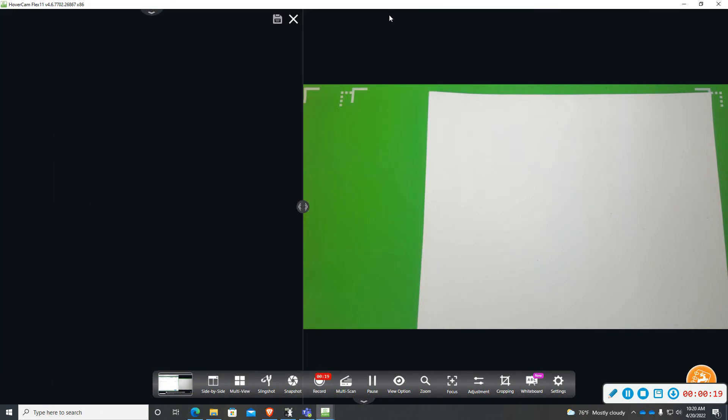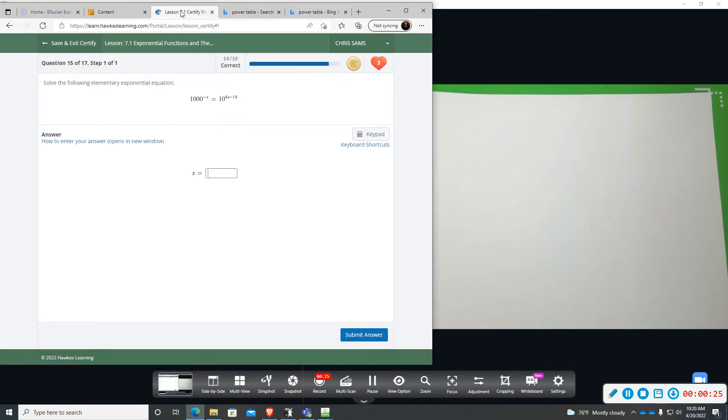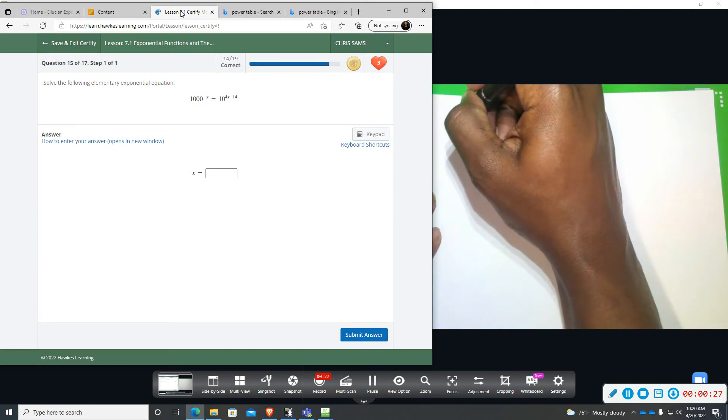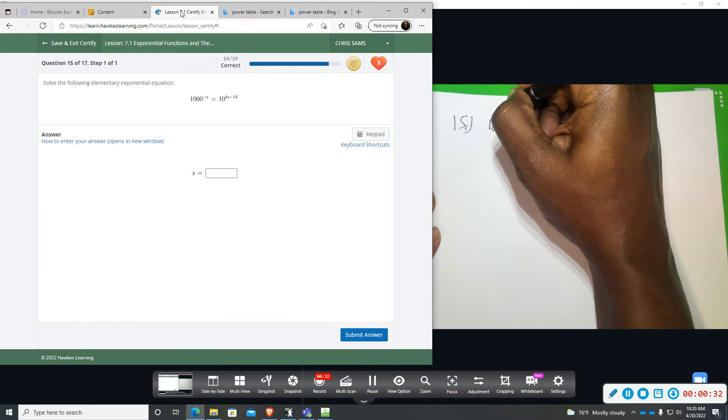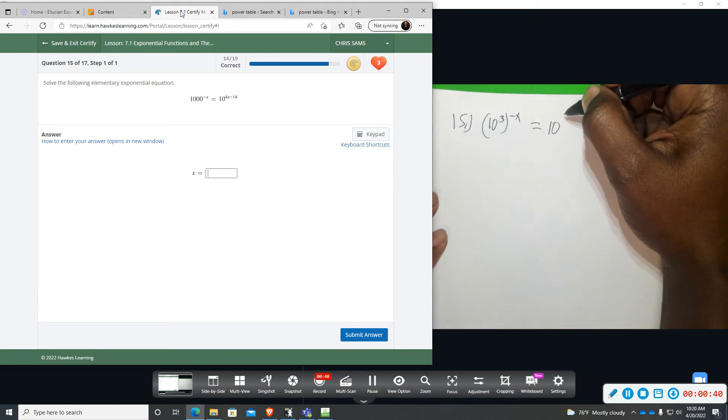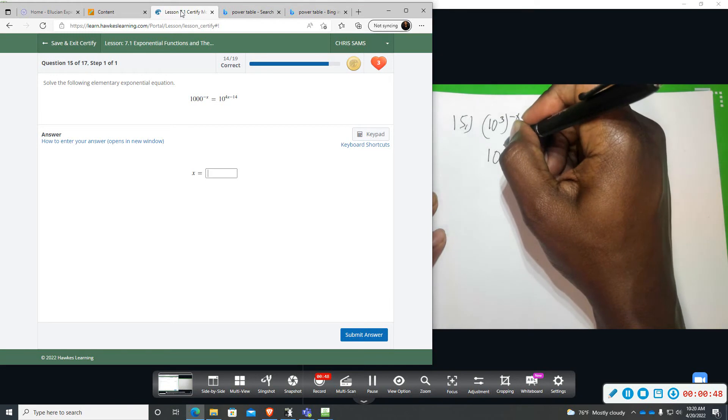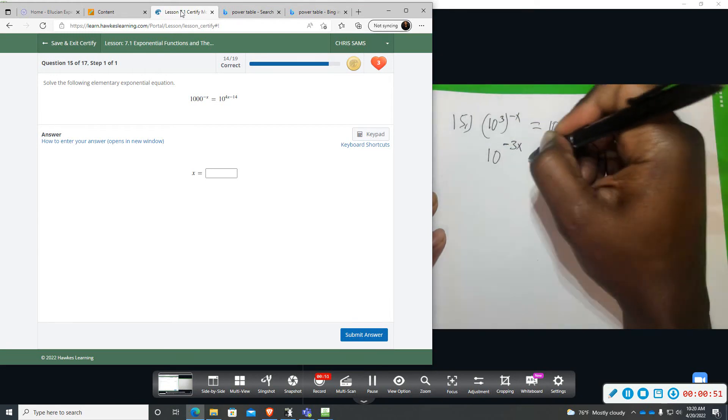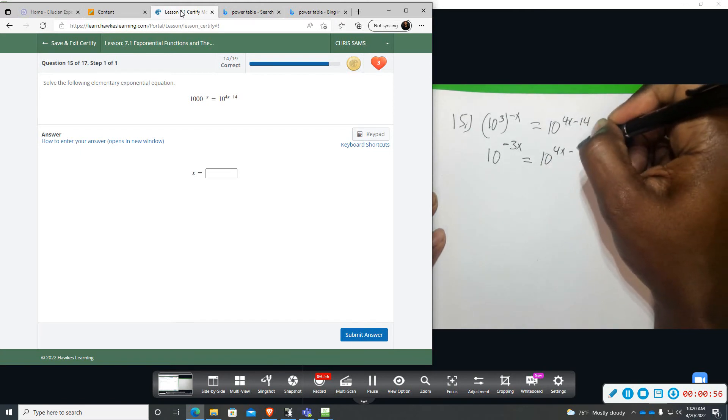I'm going to rewrite it. So instead of writing the 1000, I'm going to go ahead and write 10 to the 3rd, and then I have that negative x up there. So the 1000 is equal to 10 to the 4x power minus 14. Simplify this. I've got 10 to the negative 3x power is equal to 10 to the 4x minus 14.